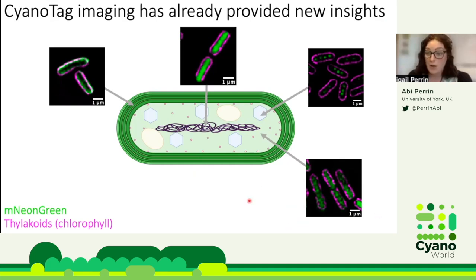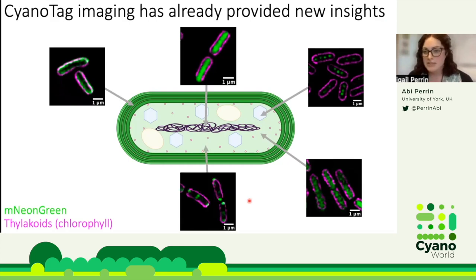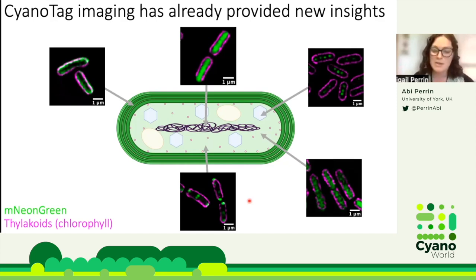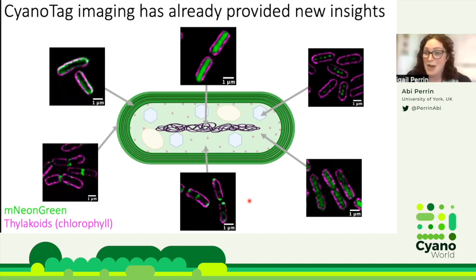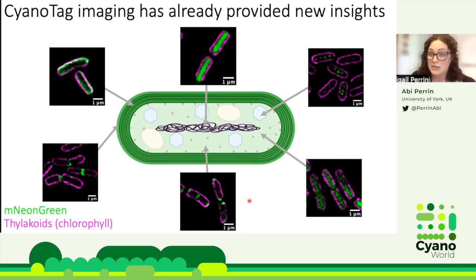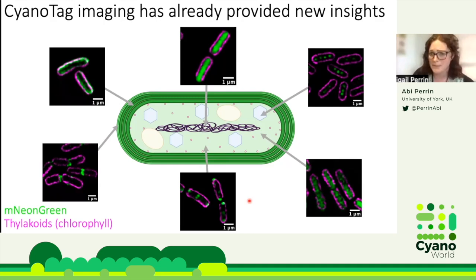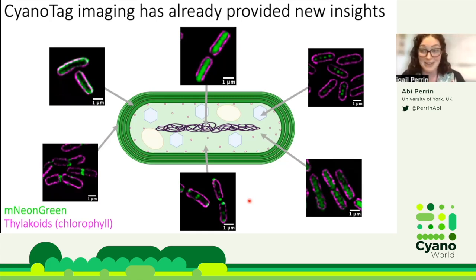Interestingly, we see some surprising localizations for known proteins — for example, one protein I expected to be diffusely localized appears to form discrete points in the cytoplasm and possibly outside it. We also have a group of proteins whose function was previously unknown but which show quite striking and interesting localization patterns, suggesting we are potentially gaining novel insights into protein function through this pipeline.